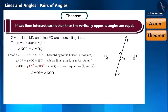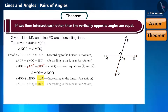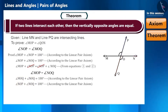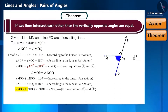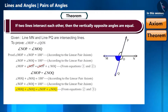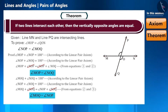Keeping the ray OQ in mind, can we say that angle MOQ plus angle NOQ is equal to 180 degrees? Yes, according to the linear pair axiom. Similarly, taking ON as the ray, angle NOP plus angle NOQ is equal to 180 degrees. If we pay attention to both equations, the right-hand side is equal, so the left-hand side will also be equal. That is, angle MOQ plus angle NOQ equals angle NOP plus angle NOQ. Since angle NOQ is the same on both sides, on cancelling it, we get angle MOQ is equal to angle NOP. In this way we proved that the vertically opposite angles formed by the intersection of two lines are equal.